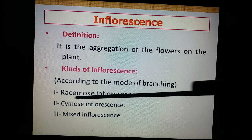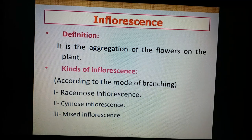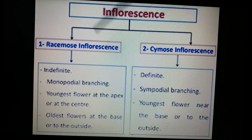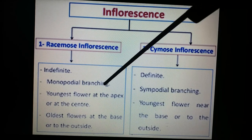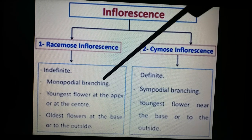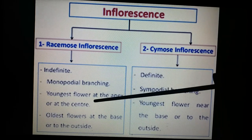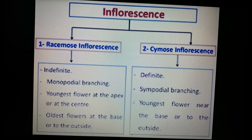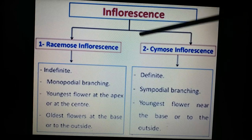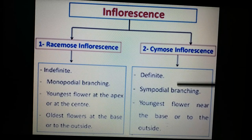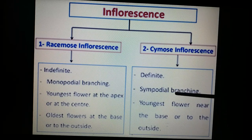In the racemose inflorescence, the growth of the peduncle is indefinite, unlimited, and said to be monopodial. The flowers are arranged in acropetal fashion — that means aged flowers at the base and young flowers at the apex. In cymose inflorescence, the growth of the peduncle is definite or limited, otherwise called sympodial, and the flowers are arranged in a basipetal manner.